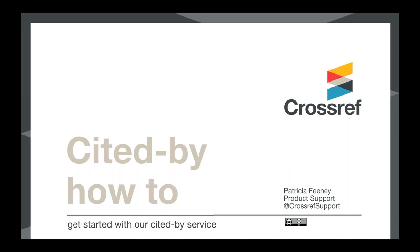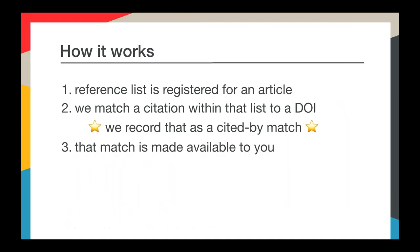We'll also try to answer some questions at the end through that panel depending on the time available. This webinar will give you an overview of how to implement our cited-by service. Our cited-by service alerts members to what items within the CrossRef database are citing their content. A publisher registers an article with CrossRef and includes the reference list in their metadata record. CrossRef then tries to find a matching record and DOI for each reference, and makes that information available to the publisher if they've signed up for our cited-by service.